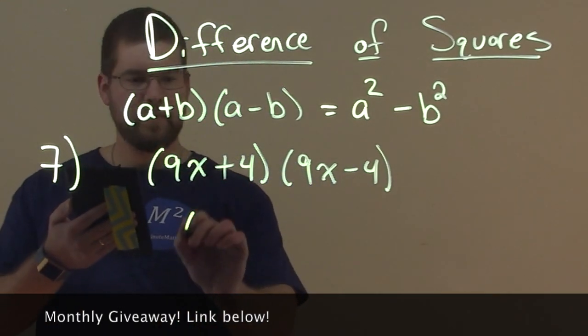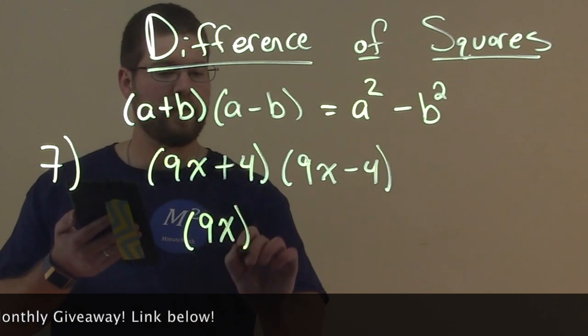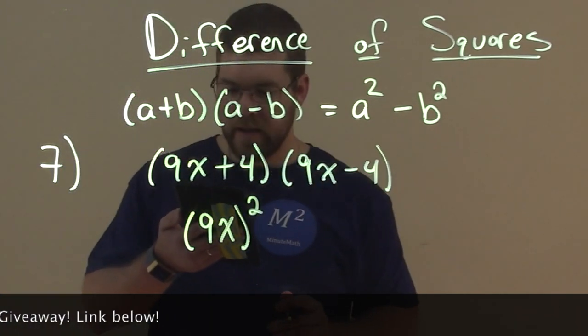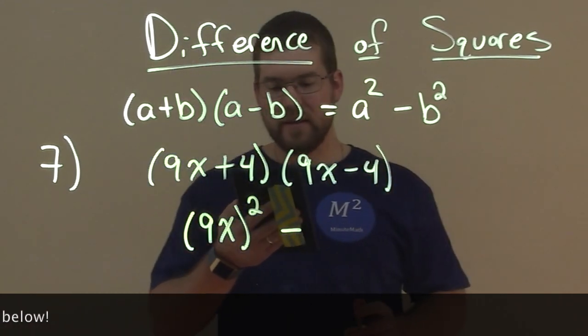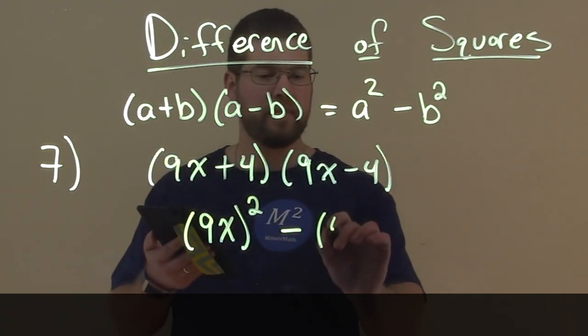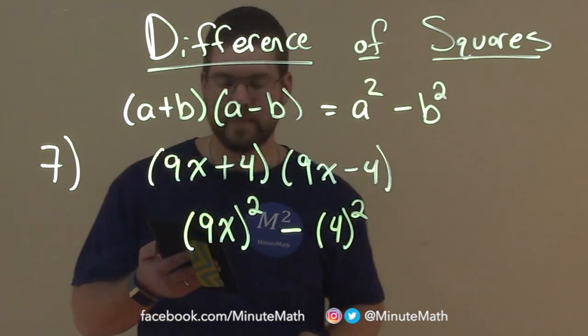So the square of the first term—9x is the first term, the whole thing is squared—and then we separate that, subtracting the last term squared, which is 4 squared. That's it.